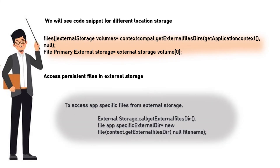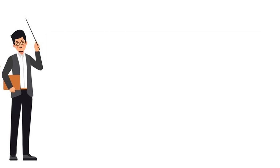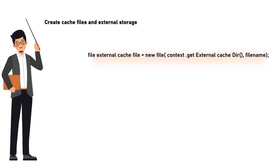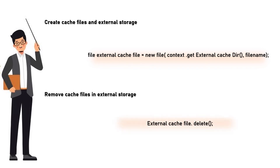Access persistent files in external storage: to access app-specific files from external storage, we use the corresponding method. To create cache files in external storage, the code snippet is shown here. To remove cache files in external storage, we use the externalCacheFile.delete() function.